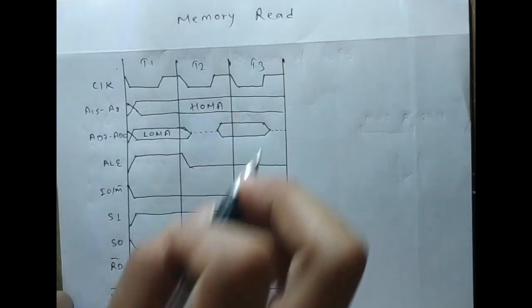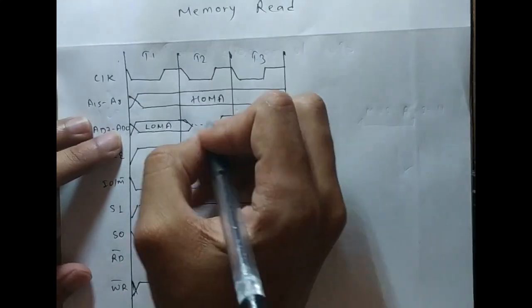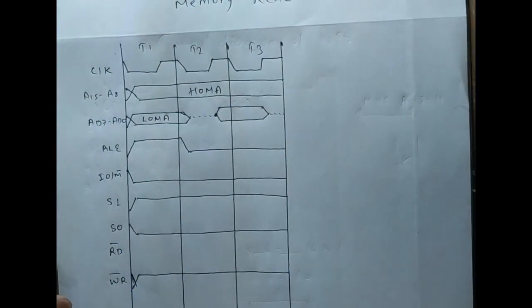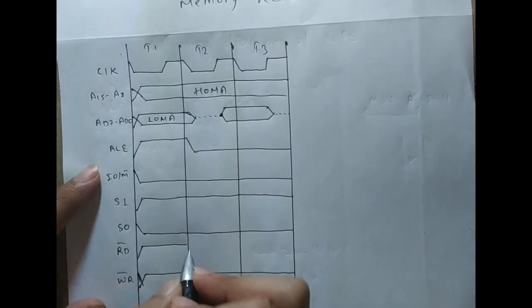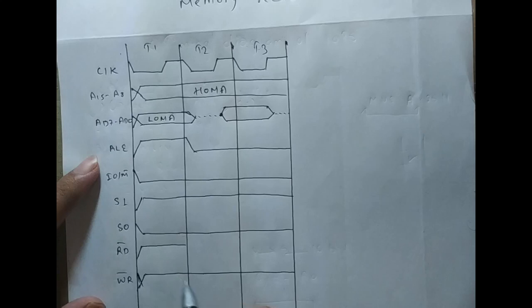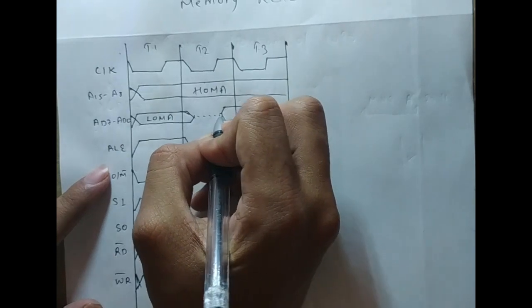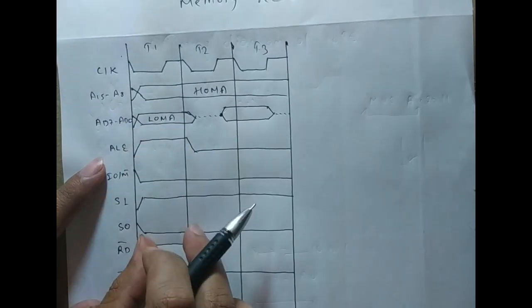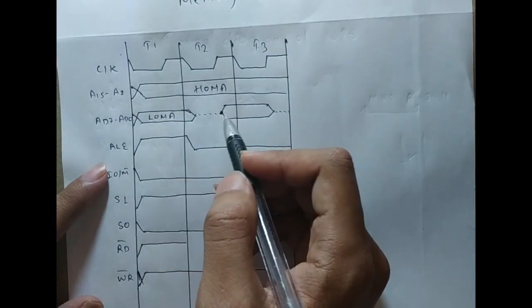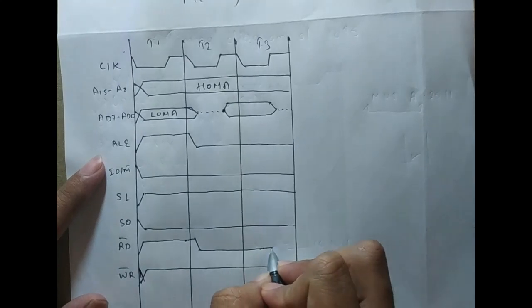For the read signal, at first we should make this read signal high, because making the read signal low in earlier states will give us a garbage value. The memory location is pointed at this part, so if we make the read bar low in the previous state, then the memory will not be pointed and a garbage value will be on our data bus. So make this low after the address is stable.